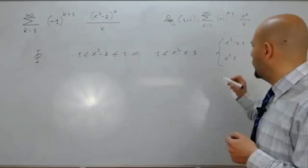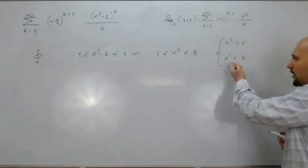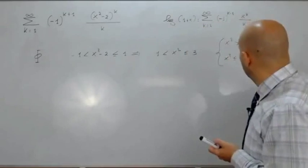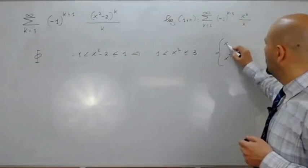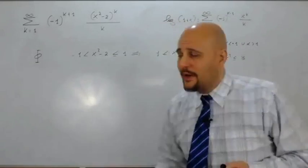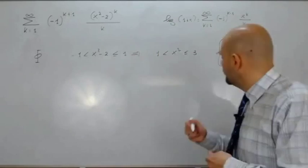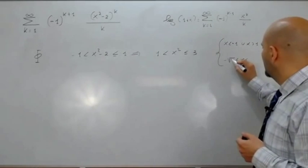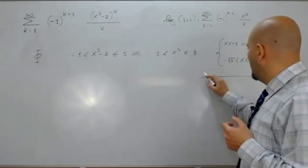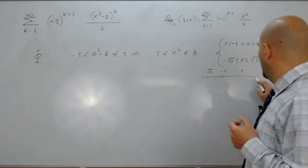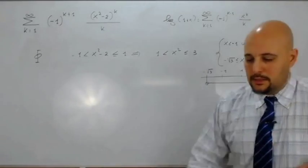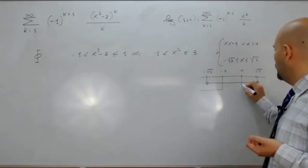Conosciamo benissimo queste due disequazioni di secondo grado pure. La prima è verificata per valori esterni, la seconda per valori interni. Al posto di x quadro maggiore di 1 scriviamo x minore di meno 1 unione x maggiore di 1. Al posto di x quadro minore o uguale di 3 scriviamo i valori interni: x compreso fra meno radice di 3 e radice di 3. Intersecando troviamo l'insieme risultante.